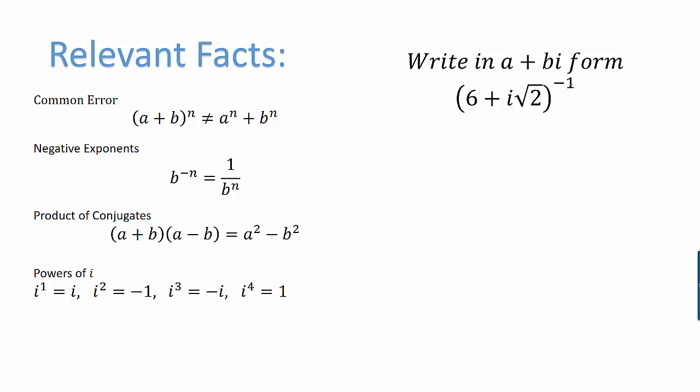Since I can't distribute the negative 1 to each part, first I'm going to use the rule about negative exponents. I'm going to rewrite it as 1 over 6 plus i to the square root of 2 to the first power. Of course, I don't have to write first power. That has no effect on the number. So this is going to be 1 over 6 plus i root 2.